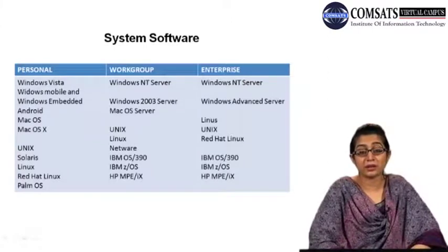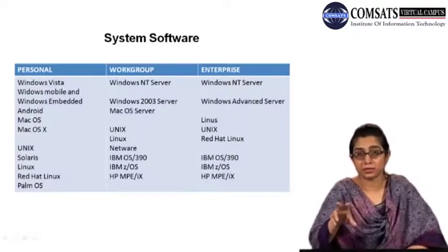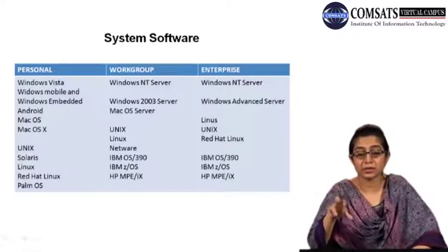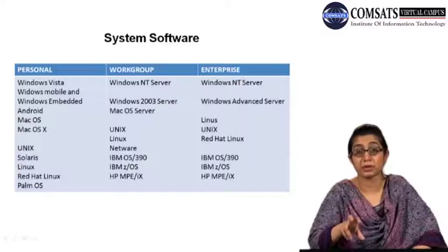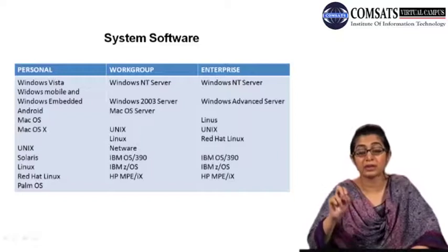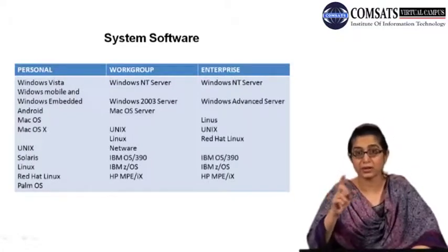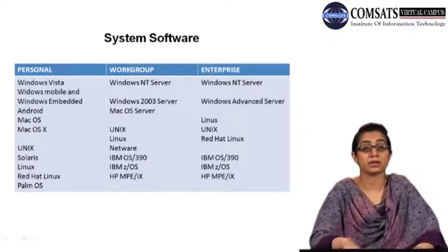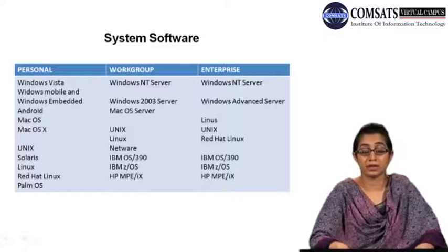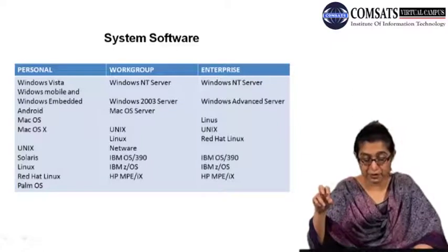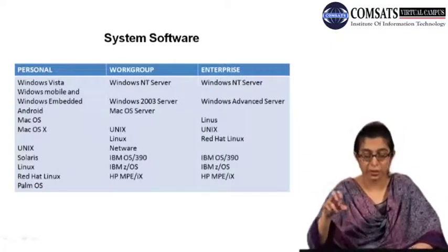At the enterprise level, much the same operating systems are given — Windows NT Server, Windows Advanced Server, Linux, Unix, Red Hat — plus there are very special kinds of operating systems used with mainframes. One of them is the IBM z/OS, the z-series operating system. If you remember, we talked about this when we were talking about the mainframe and server topic in the last lecture. The z here means zero downtime.